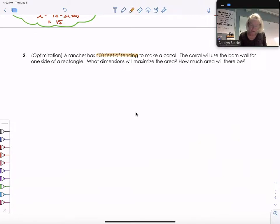Where's my highlighter? Rectangle. What dimensions, so what width and length, will maximize the area? So that's what we're trying to optimize. We want a maximum area. Let's start again by drawing a diagram.